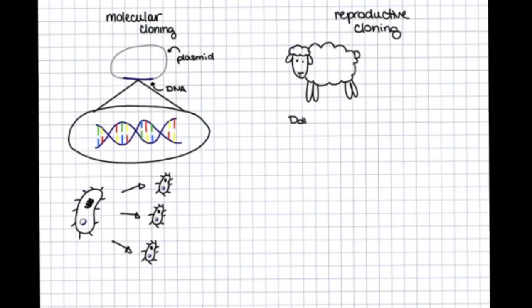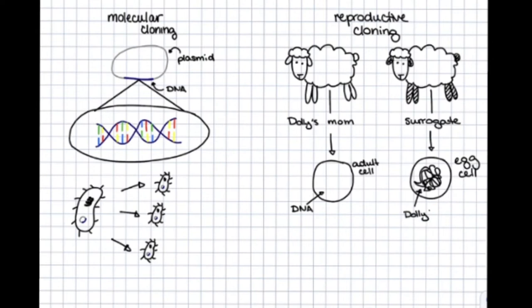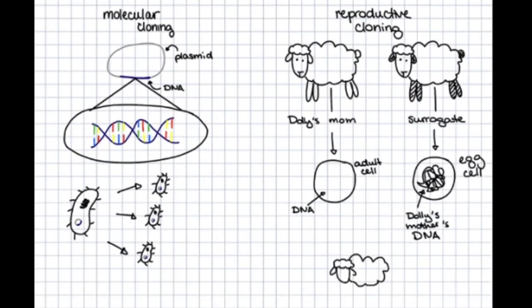She was created by removing the DNA of one sheep from an adult cell and placing it into another cell in the uterus of a surrogate sheep. When Dolly was born, her DNA was identical to that of the first donor sheep.